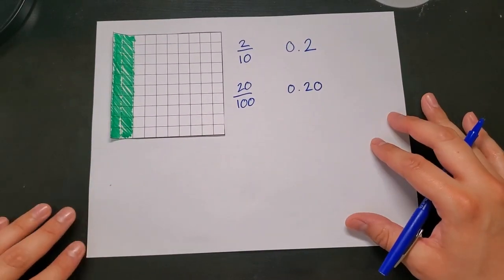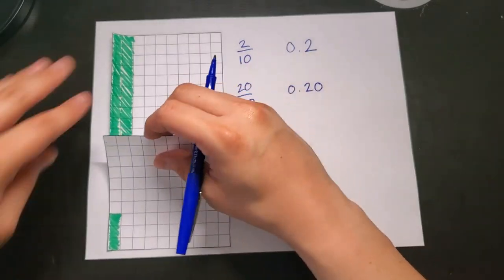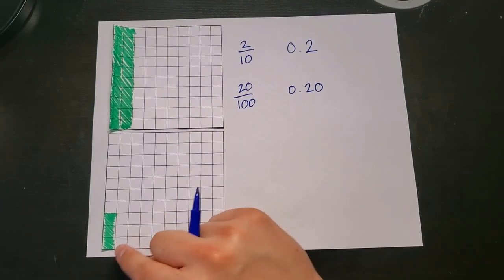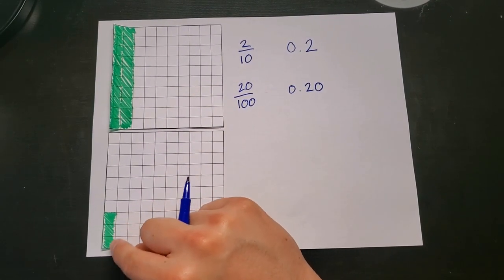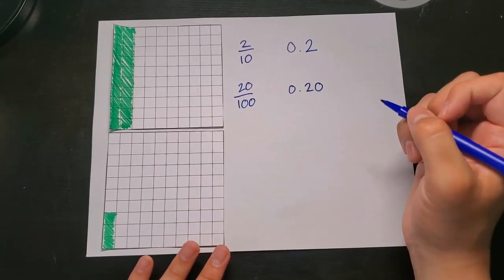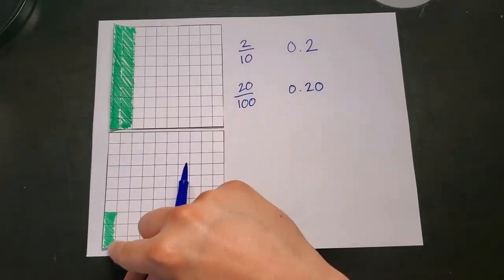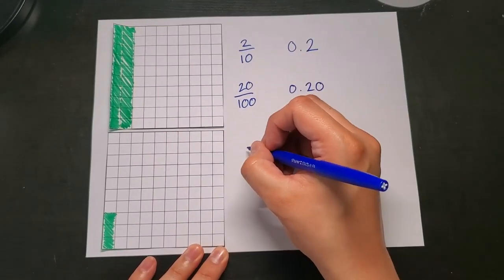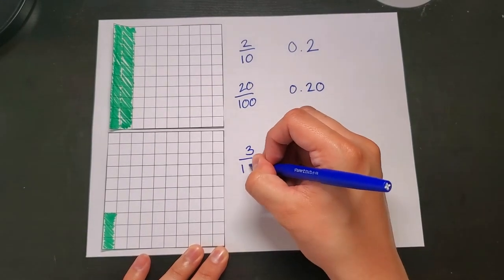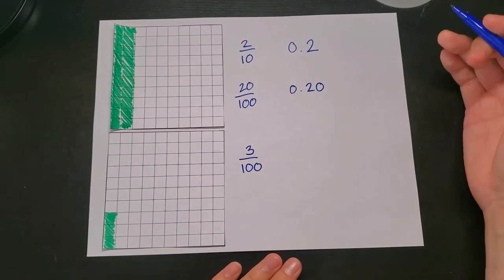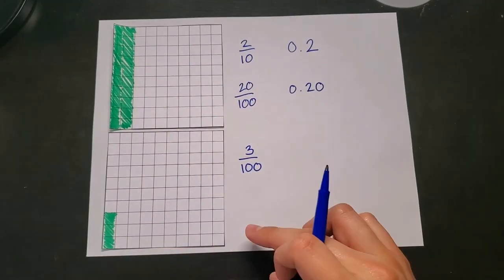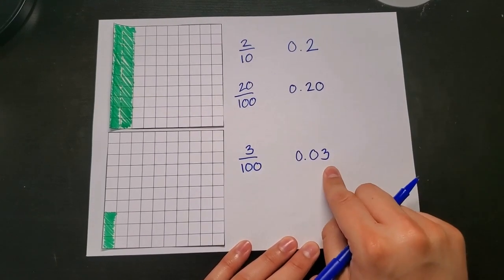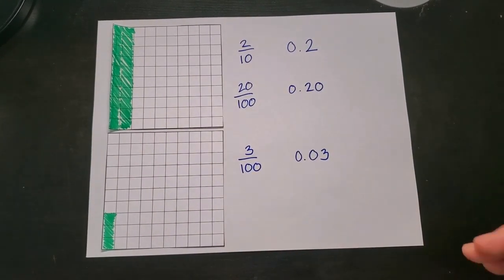Let's look at another example. Here I only have three hundredths shaded in. Because I don't have a full dime, I can't write this as a fraction with ten as a denominator — it has to be three hundredths. If I only have three pennies out of a whole dollar, I write that as 0.03, or three hundredths.